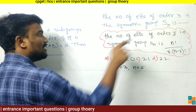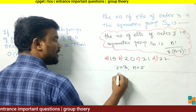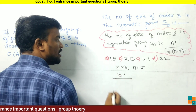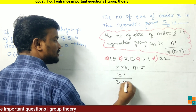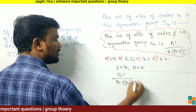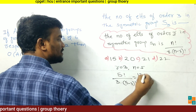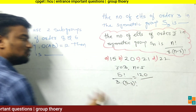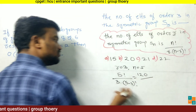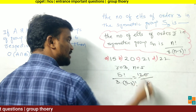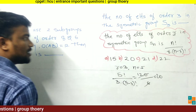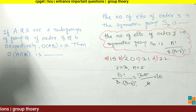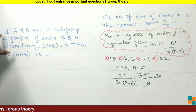Substituting the values: 5! / (3 × (5−3)!) = 120 / (3 × 2!) = 120 / (3 × 2) = 120 / 6 = 20. So the number of elements of order 3 in S₅ is 20, and option B is the solution.